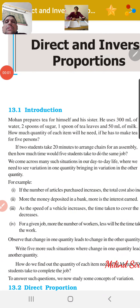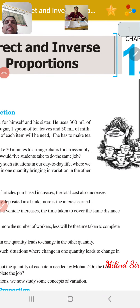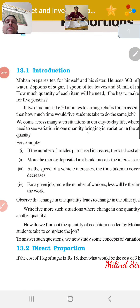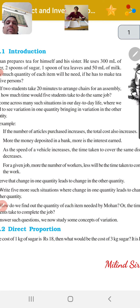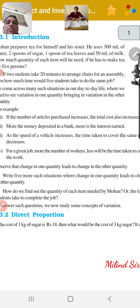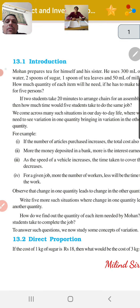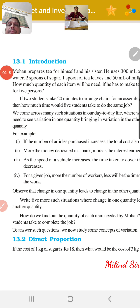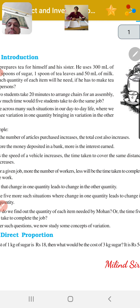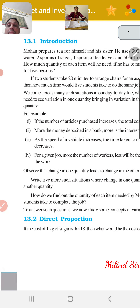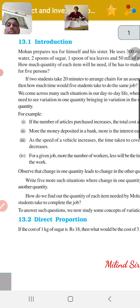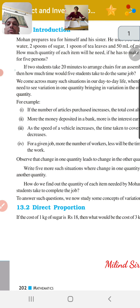Hello students. Today's standard is direct and inverse proportions. Mohan prepares tea for himself and his sister. He uses 30 ml of water, 2 spoons of sugar, 1 spoon of tea leaves, and 50 ml of milk. How much quantity of each item will he need if he has to make tea for 5 persons?